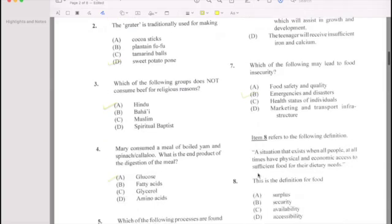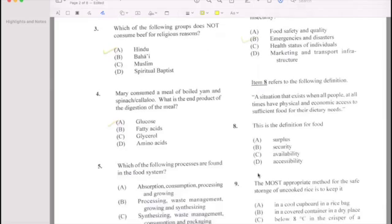Number 8: The definition for food. They gave us the definition: a situation that exists when all people at all times have physical and economic access. So if your answer is security, then you're correct.